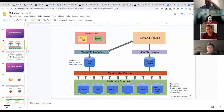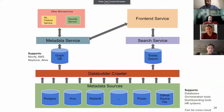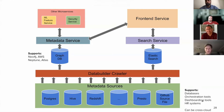So the part we're discussing is the bottom right corner of the diagram where it says 'supports.' The databases or data warehouses or query engines is the layer we just talked about. The next system is orchestration tools — Airflow, Prefect, Glue. The next layer is dashboarding tools — Tableau, Metabase, Looker, Mode. And the fourth system is HR systems, where people can bring in teams or employee information to show on the various people pages that Amundsen has today.